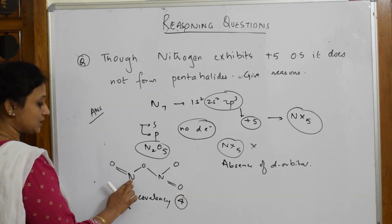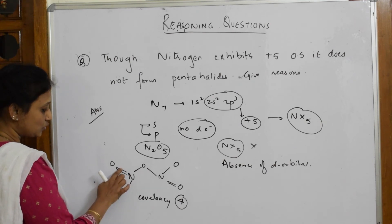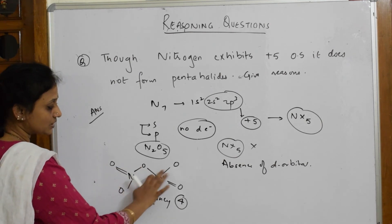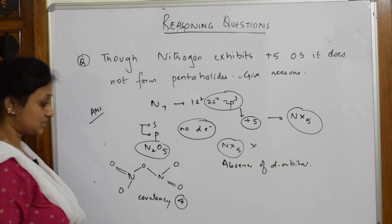How many bonds are around that nitrogen? Therefore, again once again, for this nitrogen: one, two, three, four number of bonds. For this nitrogen: one, two, three, four. Covalency is four.